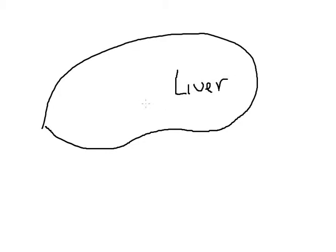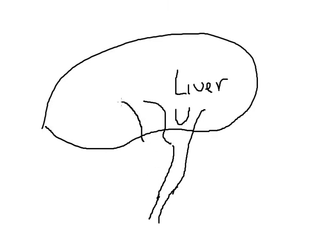Gallbladder cancer obviously involves the gallbladder, so just a quick anatomy lesson like we normally do. This is the liver, and this is the common bile duct. The gallbladder rests in the gallbladder fossa, which is actually a part of the liver, so the gallbladder is actually attached to the liver. It's also attached to what we call the common bile duct. This is the common bile duct, and this is the gallbladder.